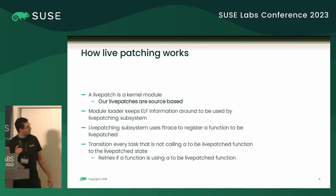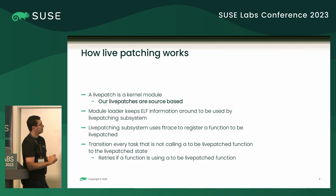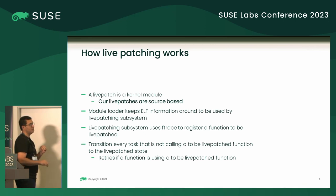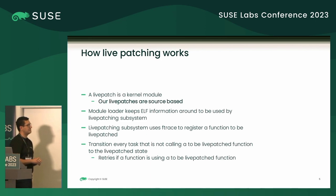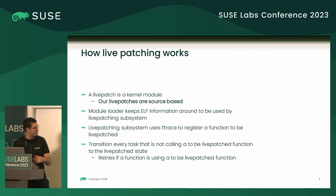First about the kernel livepatch subsystem. A livepatch is just a kernel module, like a driver, like a .ko file that has special structs to set up the livepatching. The module loader keeps some information about symbols, so the livepatch subsystem can look for symbols that are not exported. We use Ftrace to set up the livepatching. We transition every task which is not calling a function that will be livepatched to a patched state. If that task is using the function to be livepatched, it will be retried again. The transition is finished when all tasks are in the livepatched state.